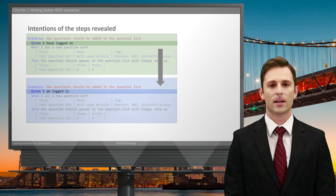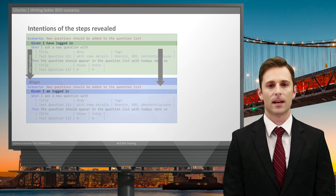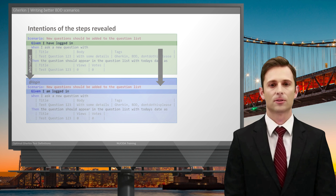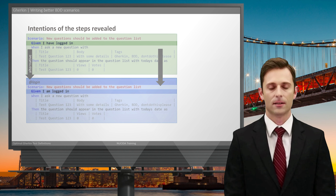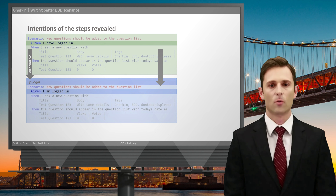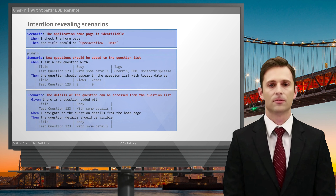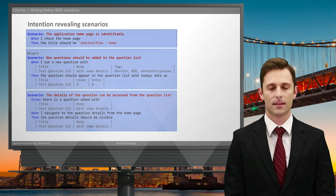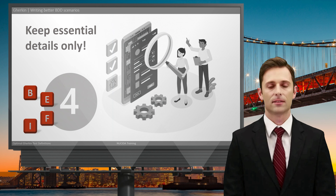This is extremely important for test automation because if you state your intentions rather than the mechanics, it opens a lot of options. For example, this step could be automated by logging in and asking the question through the website — but if that's too slow or brittle, we could simply add the record to the database, which would also ensure this precondition. With that we make the scenario simpler and more understandable while also making the automation much more optimal. The 'given I have logged in' was changed to 'given I am logged in' — a small rephrasing that expresses I don't care how, just that I am.